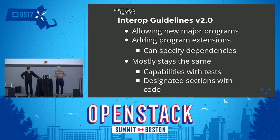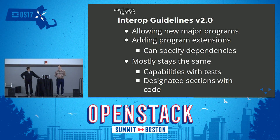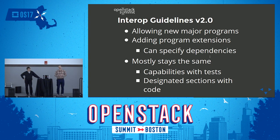This is something we presented to the board of directors over the last weekend, and they're pretty excited about it. For the last few months and in the upcoming months, we're working on a new version of the Interop Guidelines — version 2.0. There are a few new features being added that we're pretty excited about. The first is allowing new major programs — going back to the NFV example, having a new OpenStack Powered NFV that can be applied across the industry to say this cloud is ready to support NFV workloads.